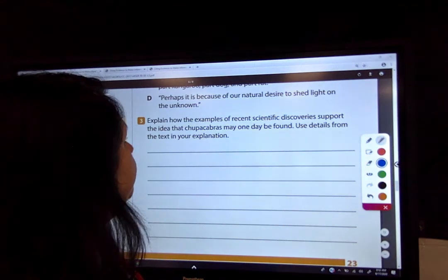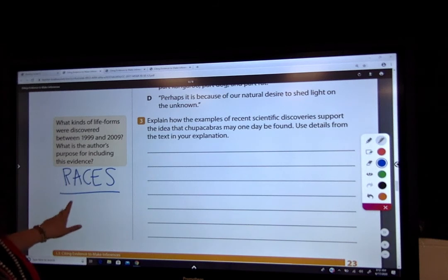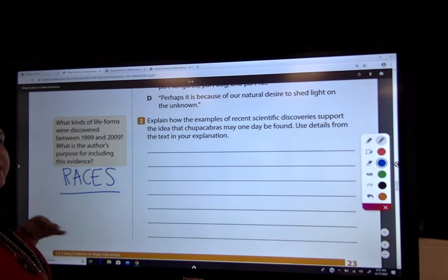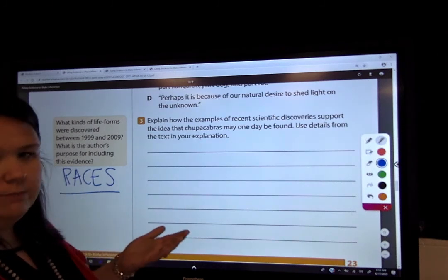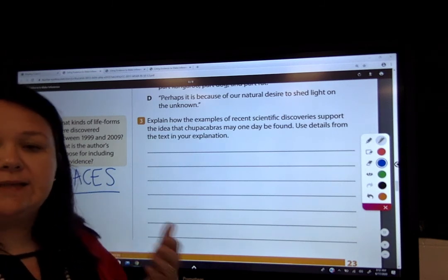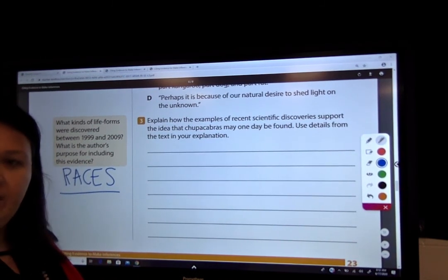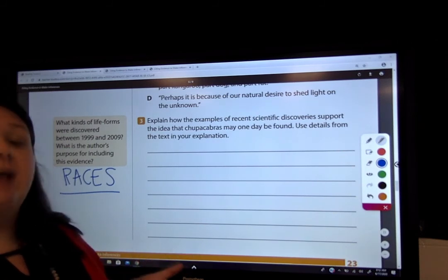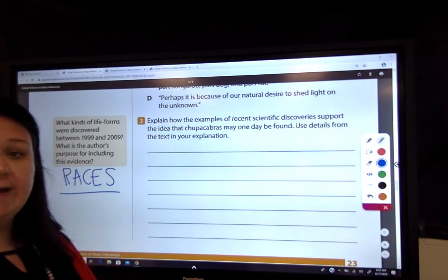So the first thing I want to do, if we come here and look at RACES, we write RACES on our paper. We know that R means to restate our question or prompt. A means to answer it. C means to cite text evidence. E means to explain what I've said, and then S means to sum it up, to summarize it.